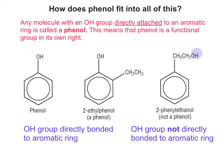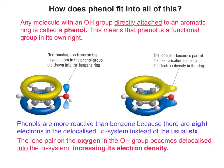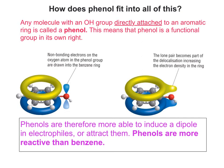You can see quite clearly why the two on the left are phenols and the one on the right isn't. Phenols are more reactive than benzene because there are eight electrons in the delocalised pi system instead of the usual six. The lone pair on the oxygen gets delocalised into the pi system, therefore increasing its electron density. This means phenols are more able to induce a dipole in electrophiles or attract them, so phenols are more reactive than benzene.